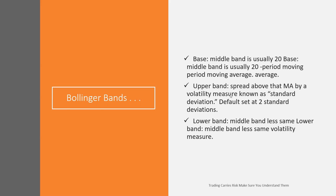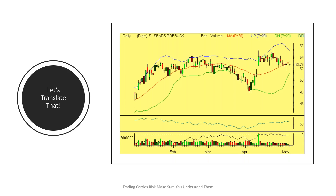The Bollinger Band has three pieces or three lines. The baseline in the middle is a 20-period moving average. Then we have the upper band, spread above the moving average by a volatility measure known as standard deviation — specifically two standard deviations. And the lower band is the exact opposite: below the moving average by two standard deviations. Let's go to a live chart and put all these words into something that makes sense.